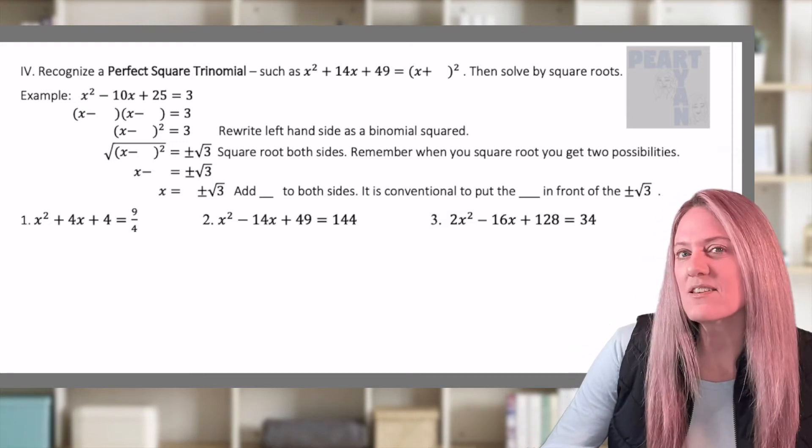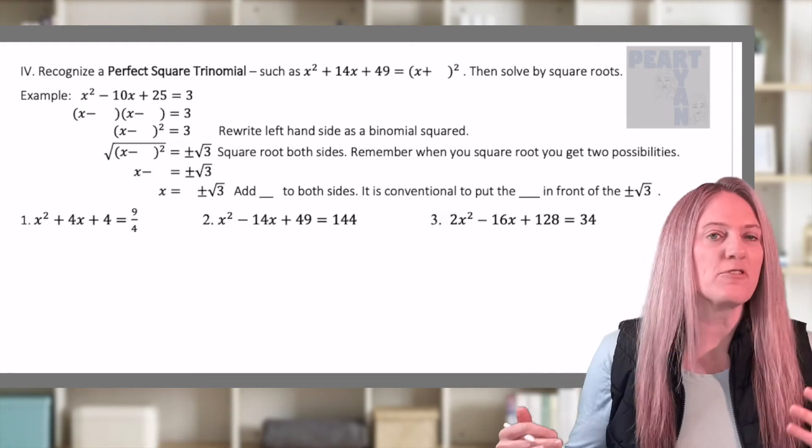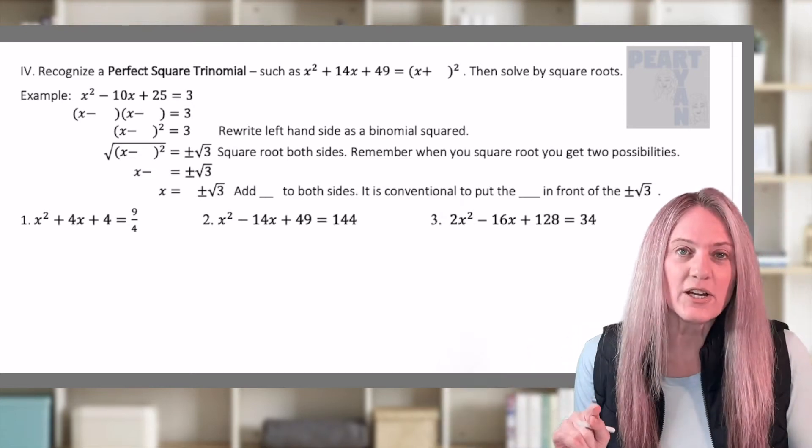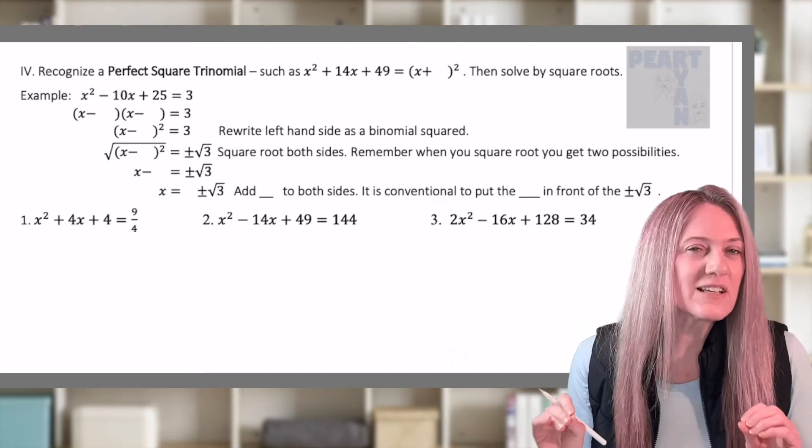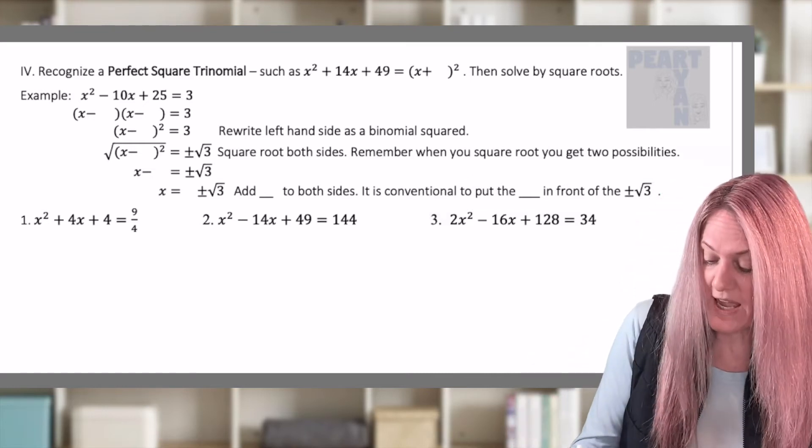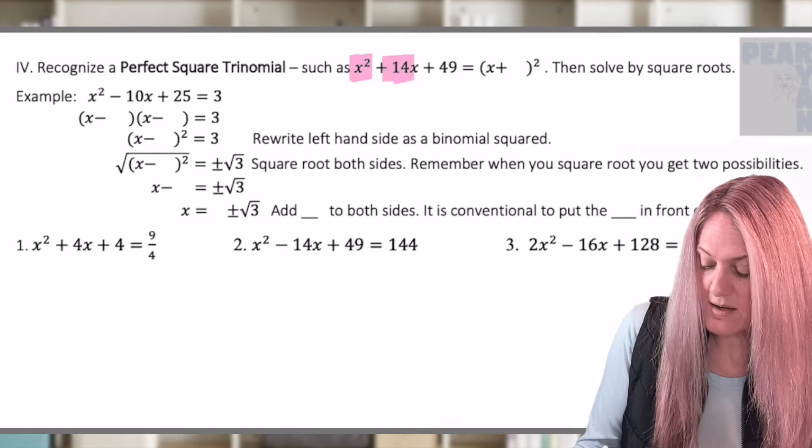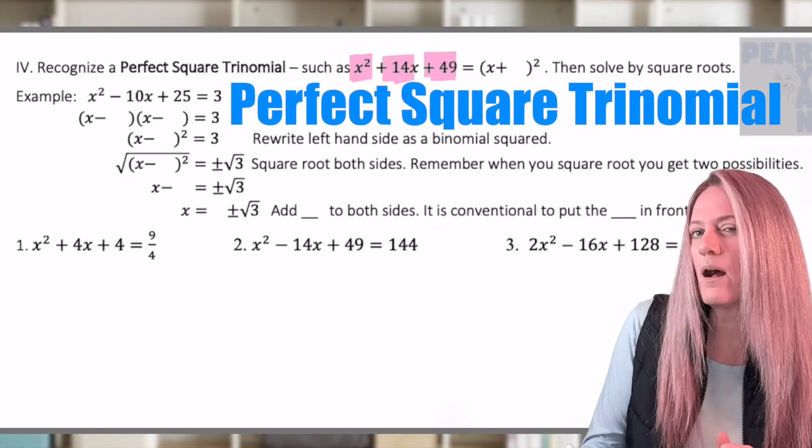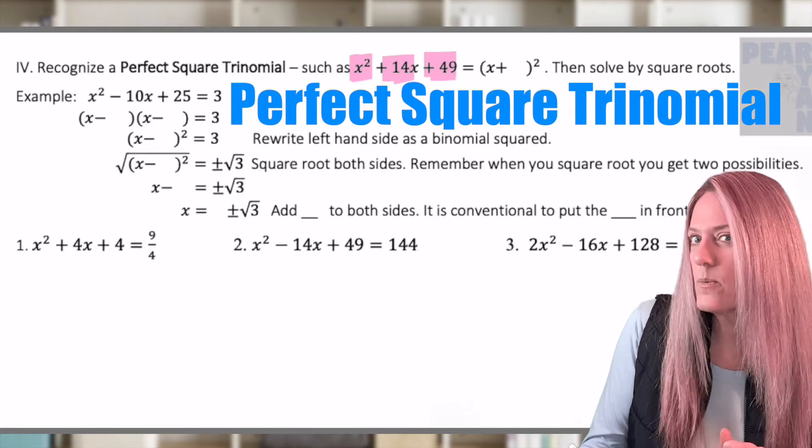Solving quadratics by completing the square. This one jumps off from our square root method that we learned last lesson. Take a look. We're going to talk about a perfect square trinomial. What does that mean? Well, look at the one we have written: x squared plus 14x plus 49. Let's see why we call it a perfect square trinomial.